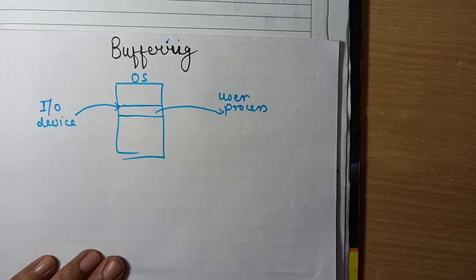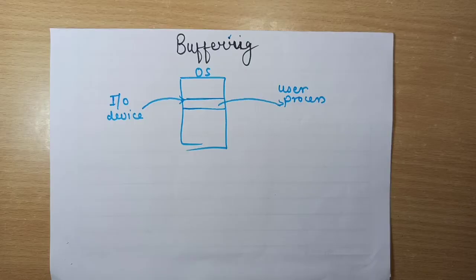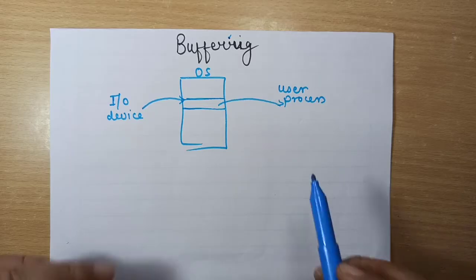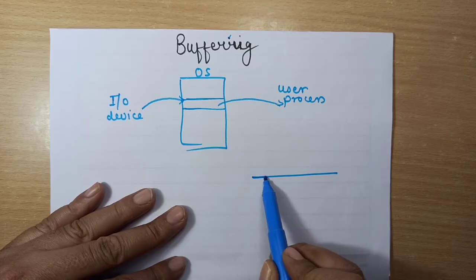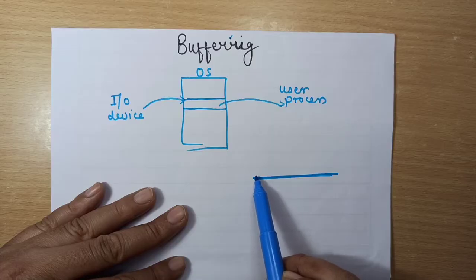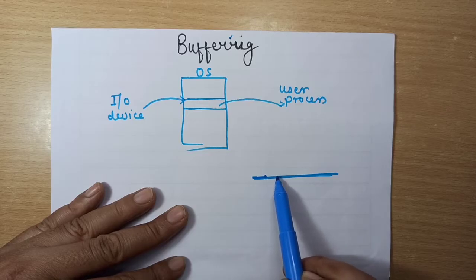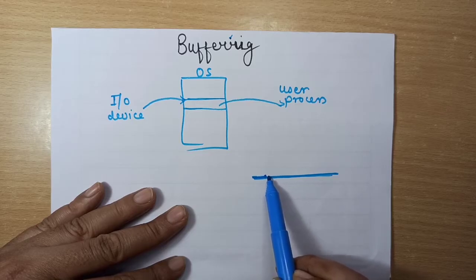So buffering is used to match the speed gap between IO devices of varied speeds and the CPU. You must have seen in YouTube, whenever you are watching a video, buffering is also there. If your internet speed is slow, the buffering speed is also low. There is a timeline — how much video you have watched is covered with the red line, and the buffered video is denoted with the white line.